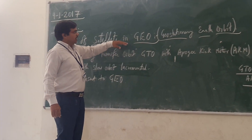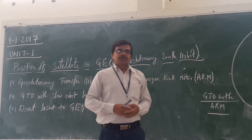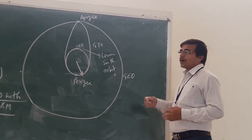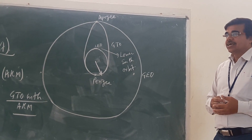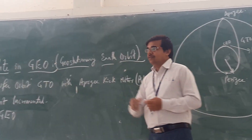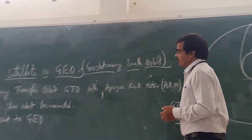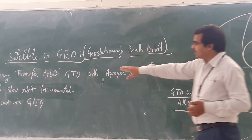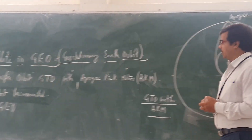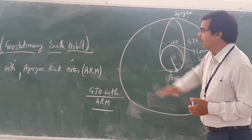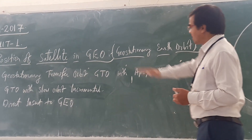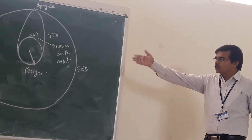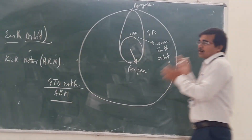Today's topic is the position of satellites in Geostationary Earth Orbit. We have to launch a satellite into geostationary earth orbit, and there are 3 different ways to do so. The first one is Geostationary Transfer Orbit with Apogee Kick Motor, the second is Geostationary Transfer Orbit with Slow Orbit Incremental, and the third is Direct Insert to Geostationary Earth Orbit.